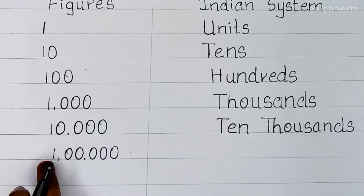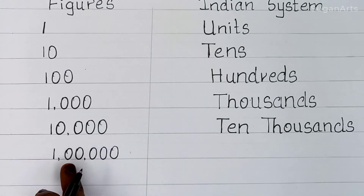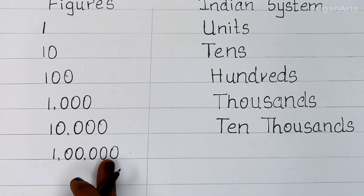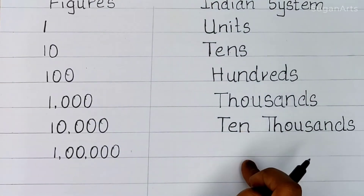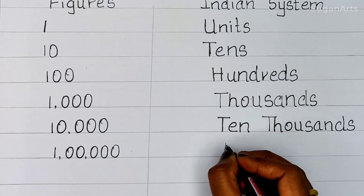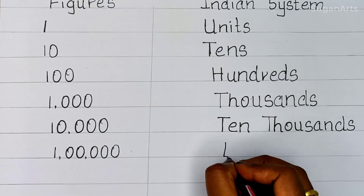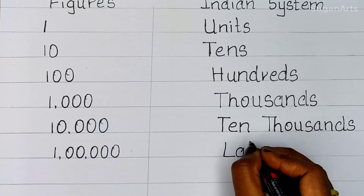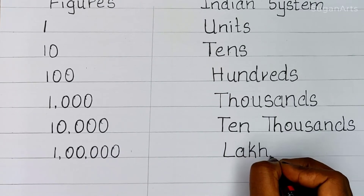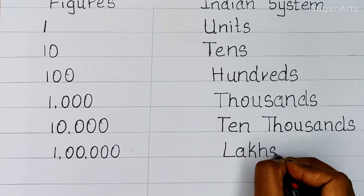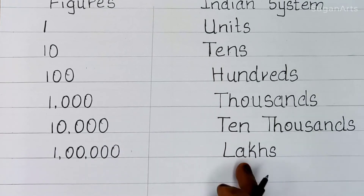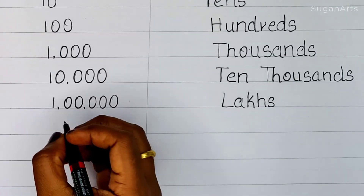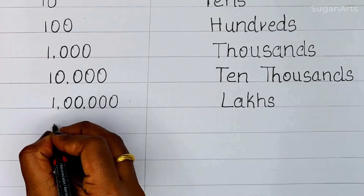So next, 1 0 0 0 0 0. If we put 1 and 5 zeros in the Indian system we call it as Lakh. L-A-K-H-S. Lakh.